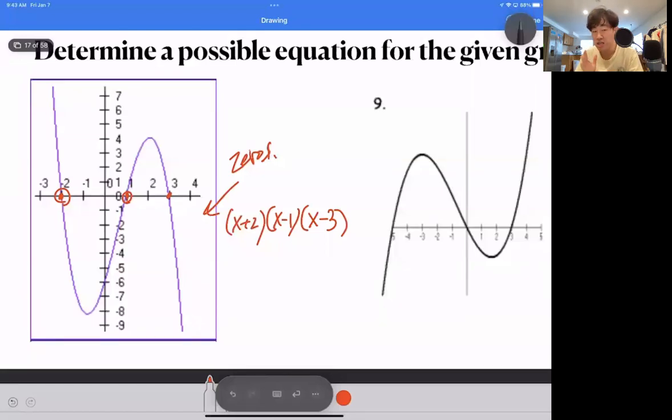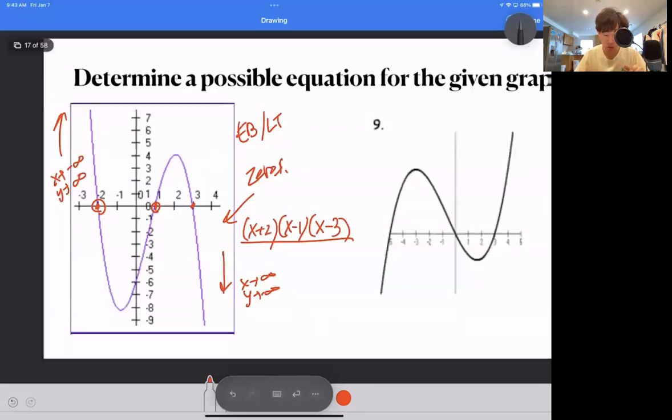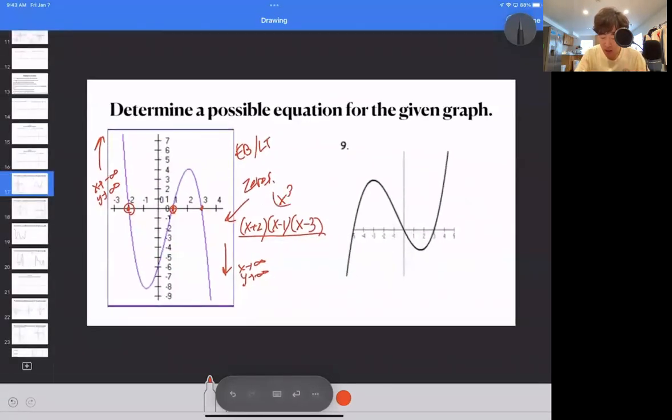Now there's one really key concept here that you must account for. Am I done or not? At this case, you have to answer that by using the last component, which is your end behavior slash leading term. Now the end behavior, it seems to me that it goes up and down like this, where as x approaches negative infinity, y is approaching positive infinity. As x approaches positive infinity, y is approaching negative infinity. So which of those four end behaviors make sense with this particular one? We know that it's x to the power of three.